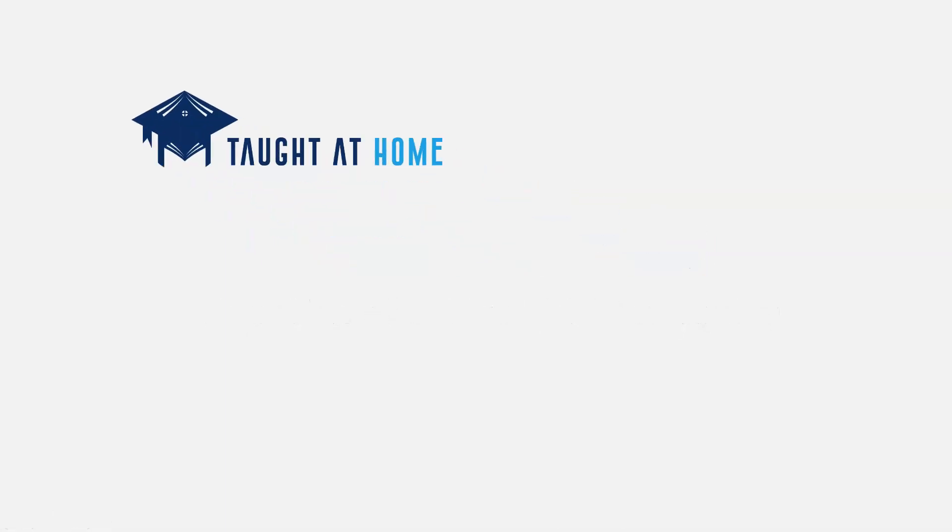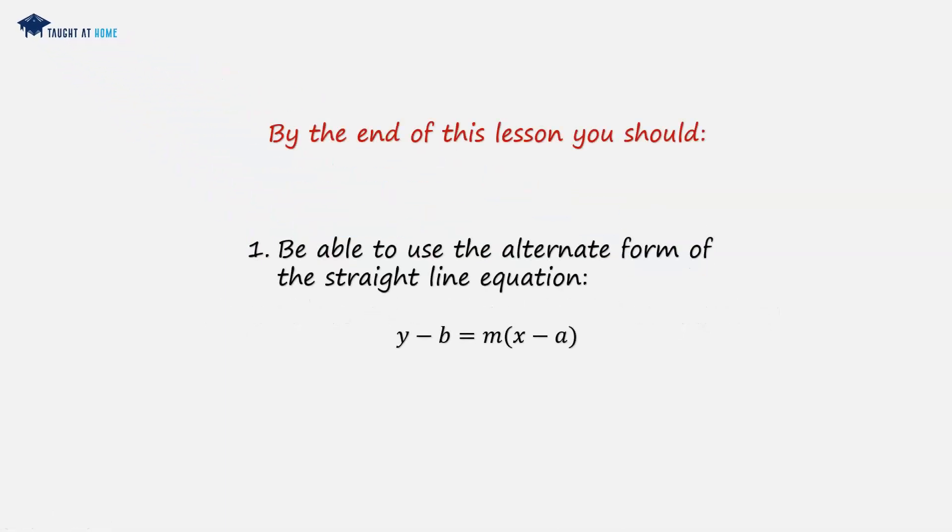Equation of a straight line part 7. What we're going to do in this lesson is look at the alternate form of the straight line equation, y minus b equals m times x minus a.